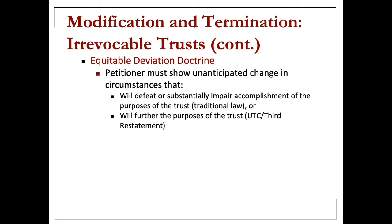When the settlor does not consent to modification or termination but all beneficiaries agree and the trustee objects, you can apply the Claflin doctrine or the Equitable Deviation Doctrine. However, common law courts prefer to apply the Equitable Deviation Doctrine only to modifications for administrative purposes, as opposed to modifications on terms of distributions or something more substantive.